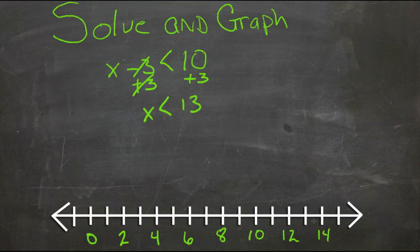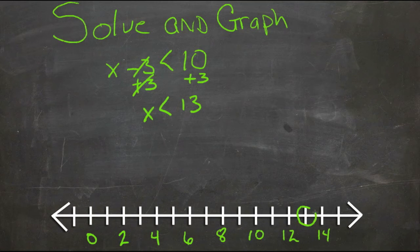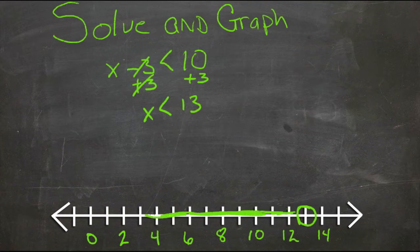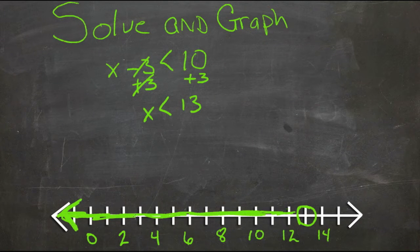Then we find 13 on our graph. It says that x is less than 13, so not equal to. So we'll just draw a circle around the point at 13 and then we shade to the left. So x can be anything right up to 13 or any number smaller than that.